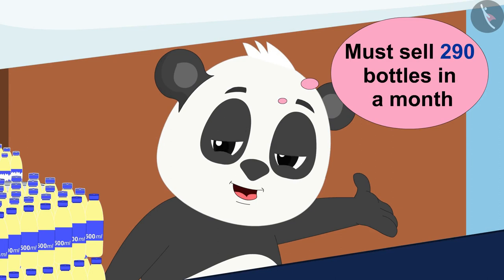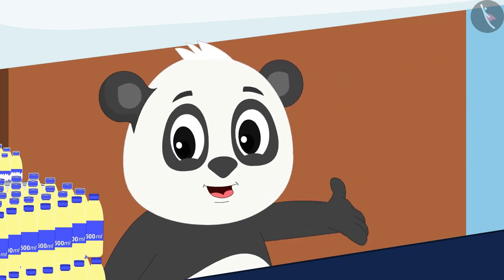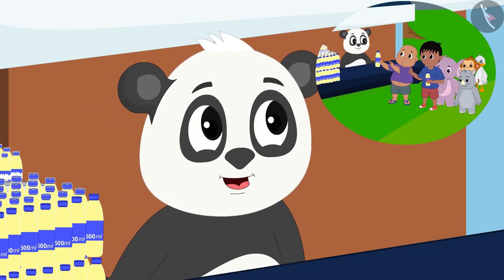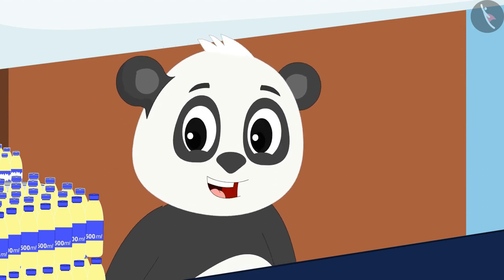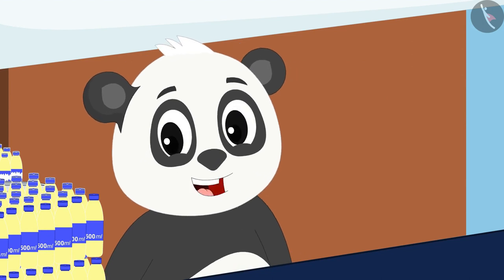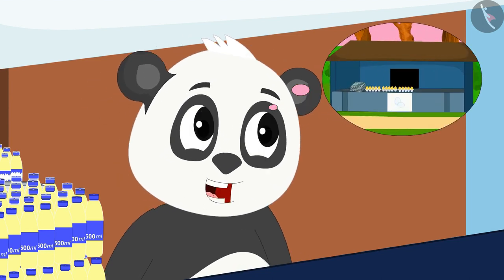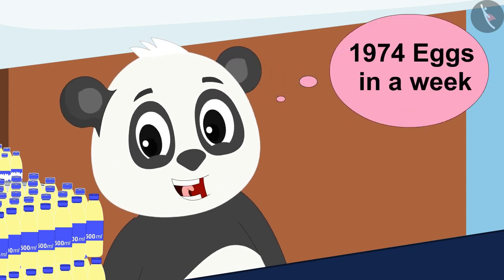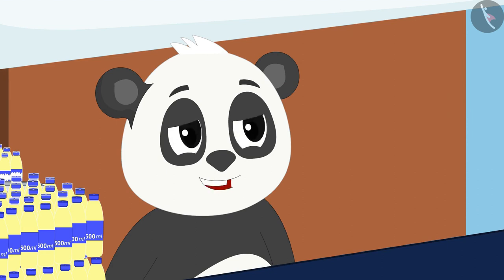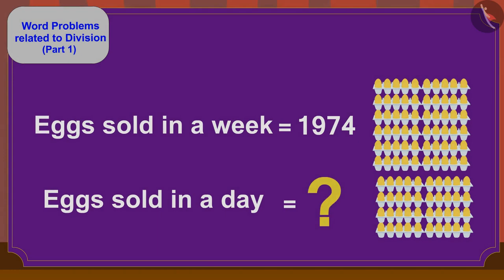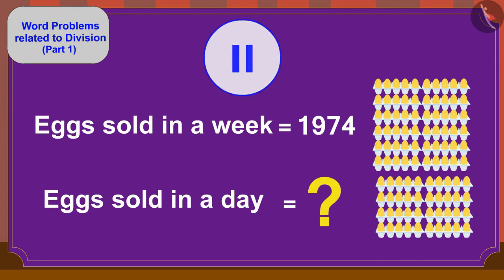Golu also found the solution, just like you! Golu becomes very happy thinking that he will sell so many bottles of masala milk. He thinks: I will make a lot of money by selling so many masala milk bottles. With that money, I will open a store of eggs. If I sell 1974 eggs a week, I will earn more money. Then I will buy a farm. But how many eggs would I have to sell each day? Can you find the answer to this question, children? If you want, you can stop the video and find the answer.